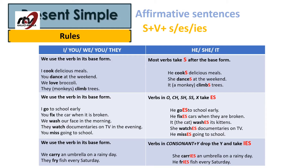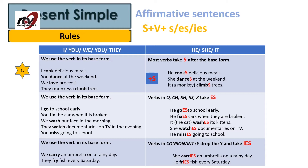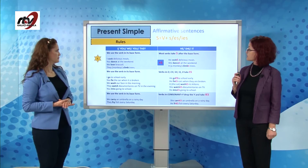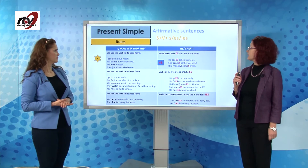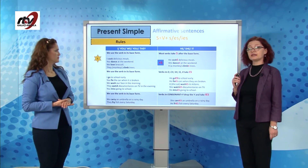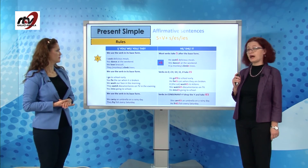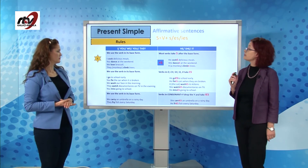The first rule: we add an S for most verbs if the subject is he, she or it. He cooks delicious meals, she dances at the weekend, a monkey climbs trees.